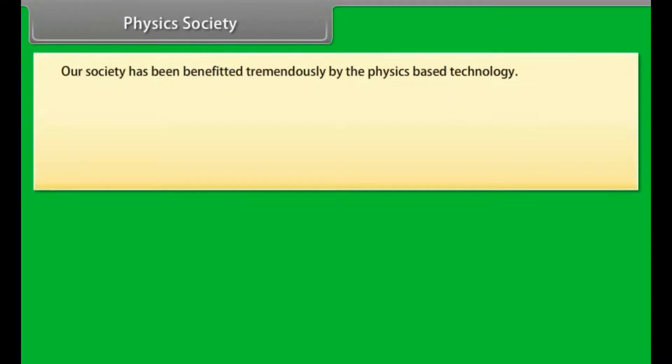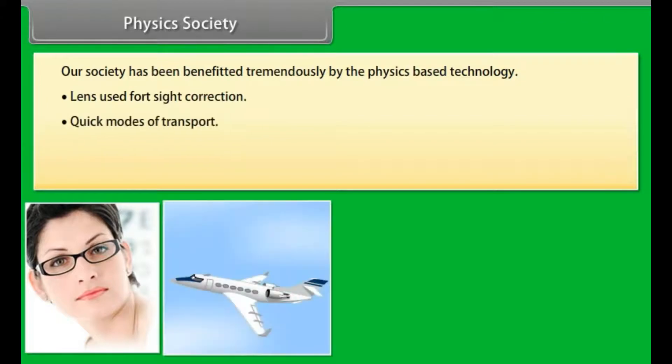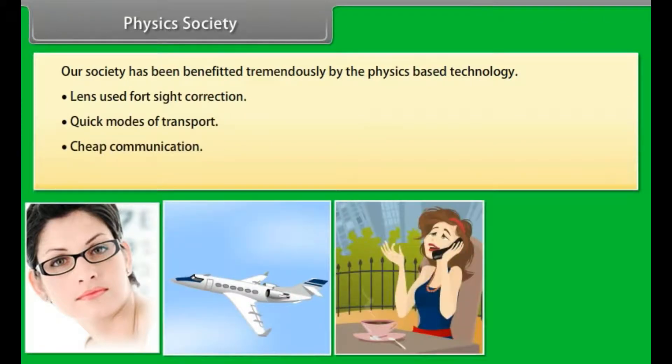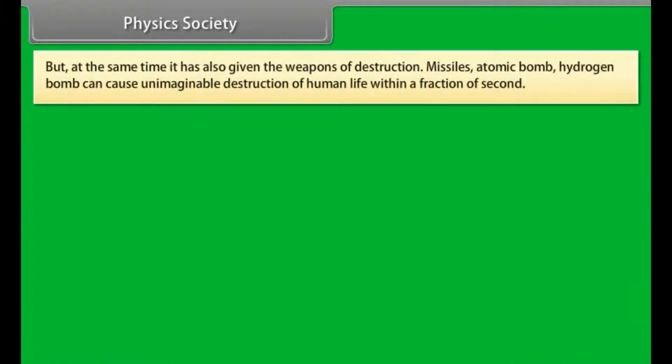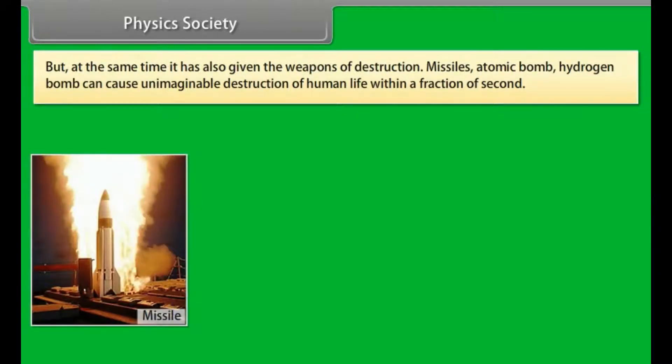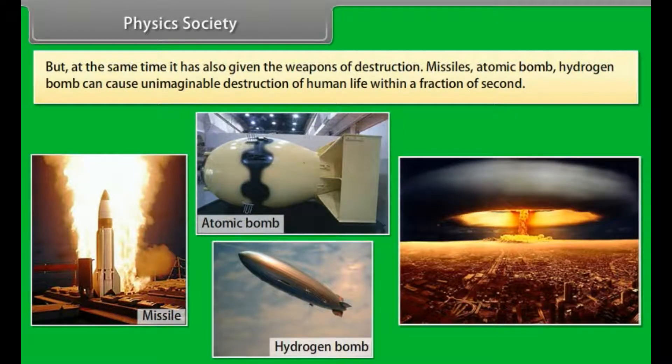Physics and society. Our society has been benefited tremendously by physics-based technology. Lens used for sight correction, quick modes of transport, cheap communication, weather forecasting are some new dimensions of progress due to physics. But at the same time, it has also given the weapons of destruction. Missiles, atomic bomb, hydrogen bomb can cause unimaginable destruction of human life within a fraction of second.